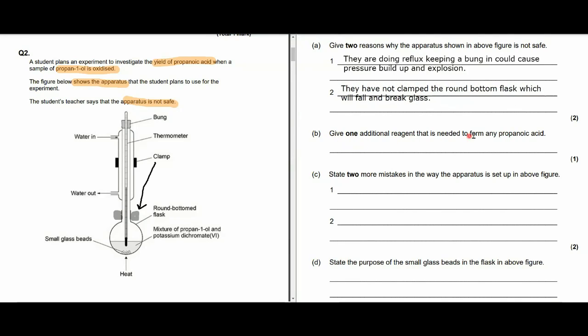Okay, what's the next question? Give one additional reagent that is needed to form any propanoic acid. Well, in order to form propanoic acid, we need an oxidizing agent, which is the potassium dichromate. And we're going to need phosphoric or sulfuric acid as a catalyst. State two more mistakes in the way the apparatus is set up in the above figure. So two more mistakes that the apparatus is set up here.